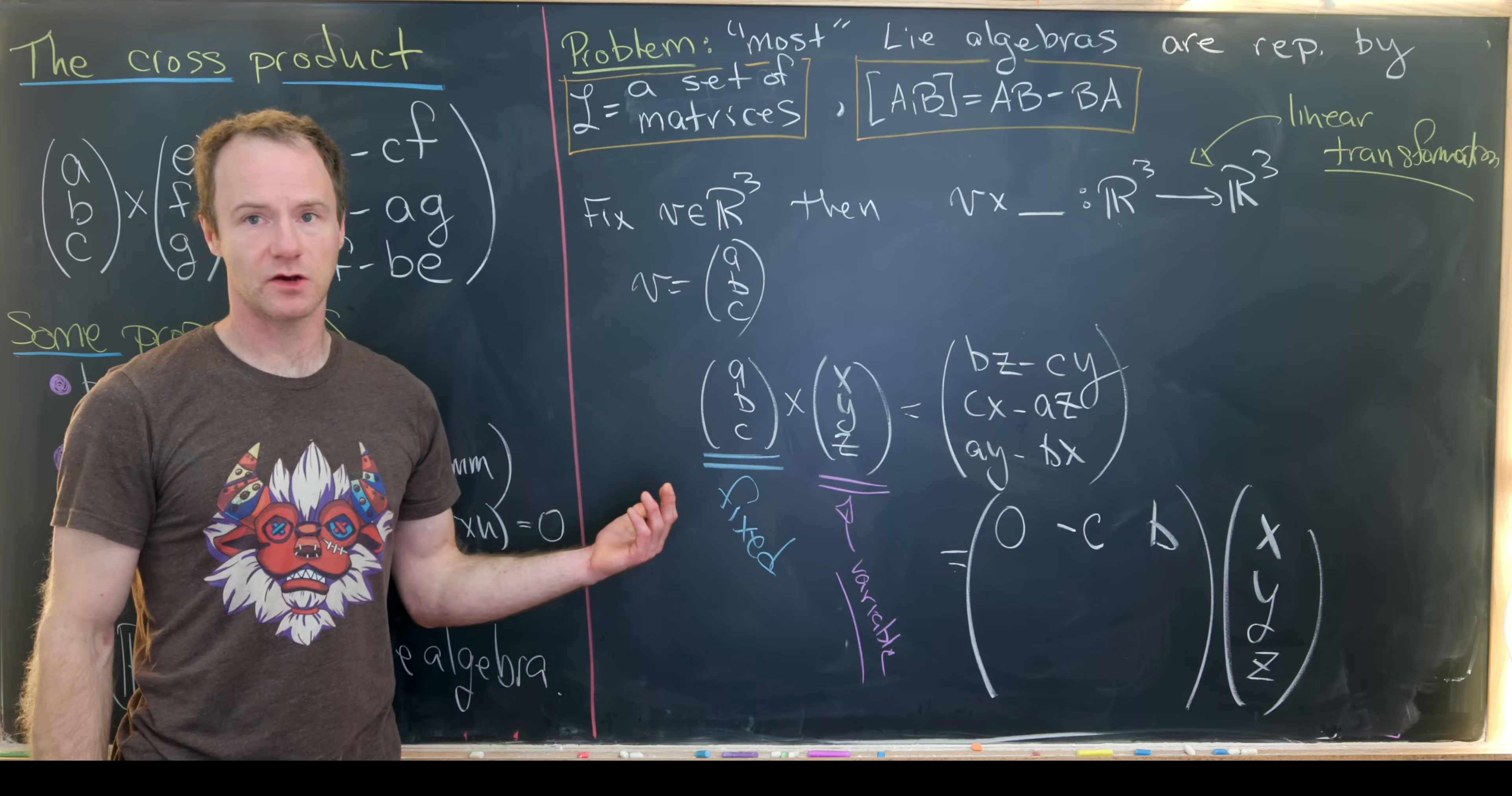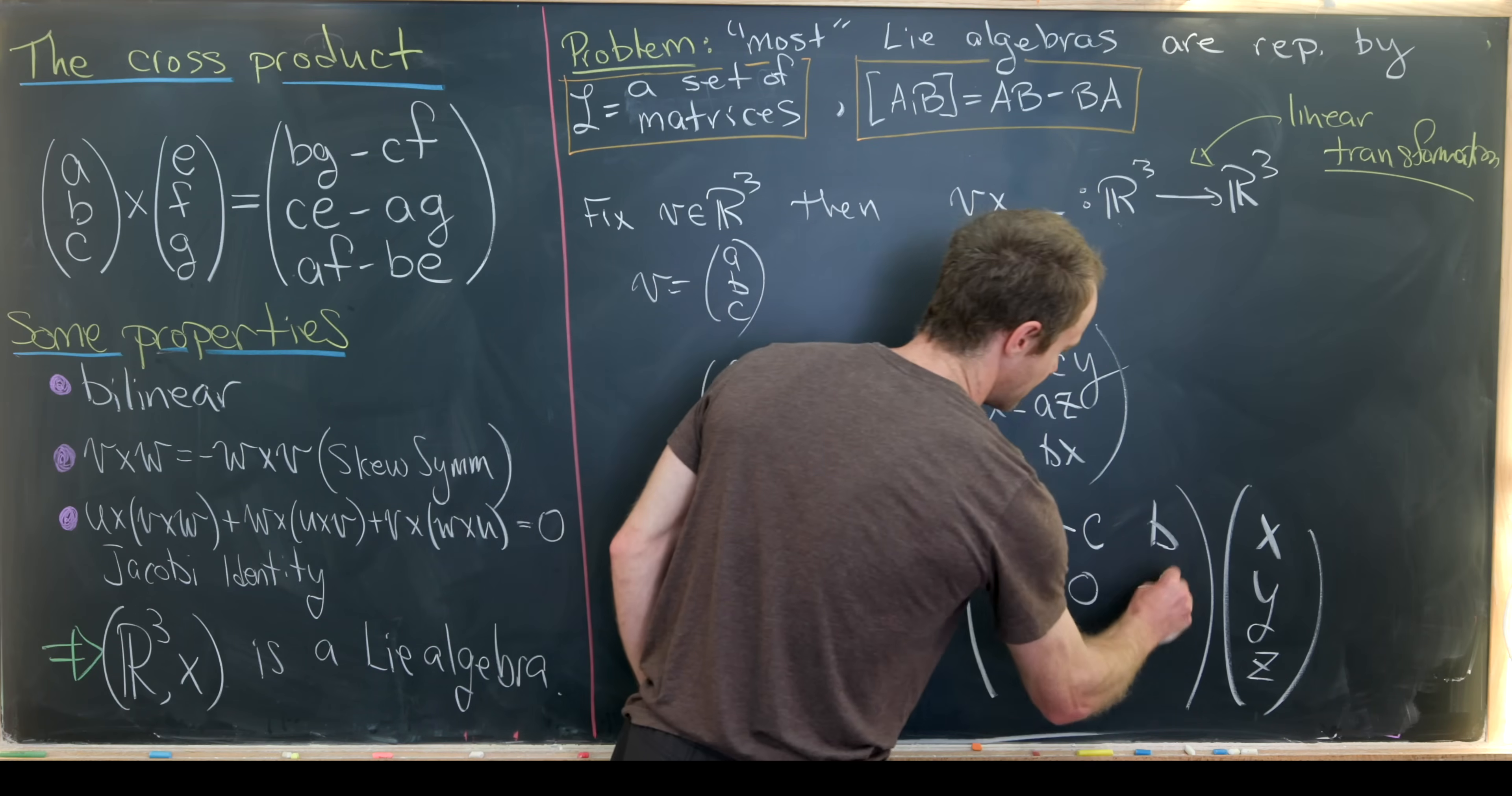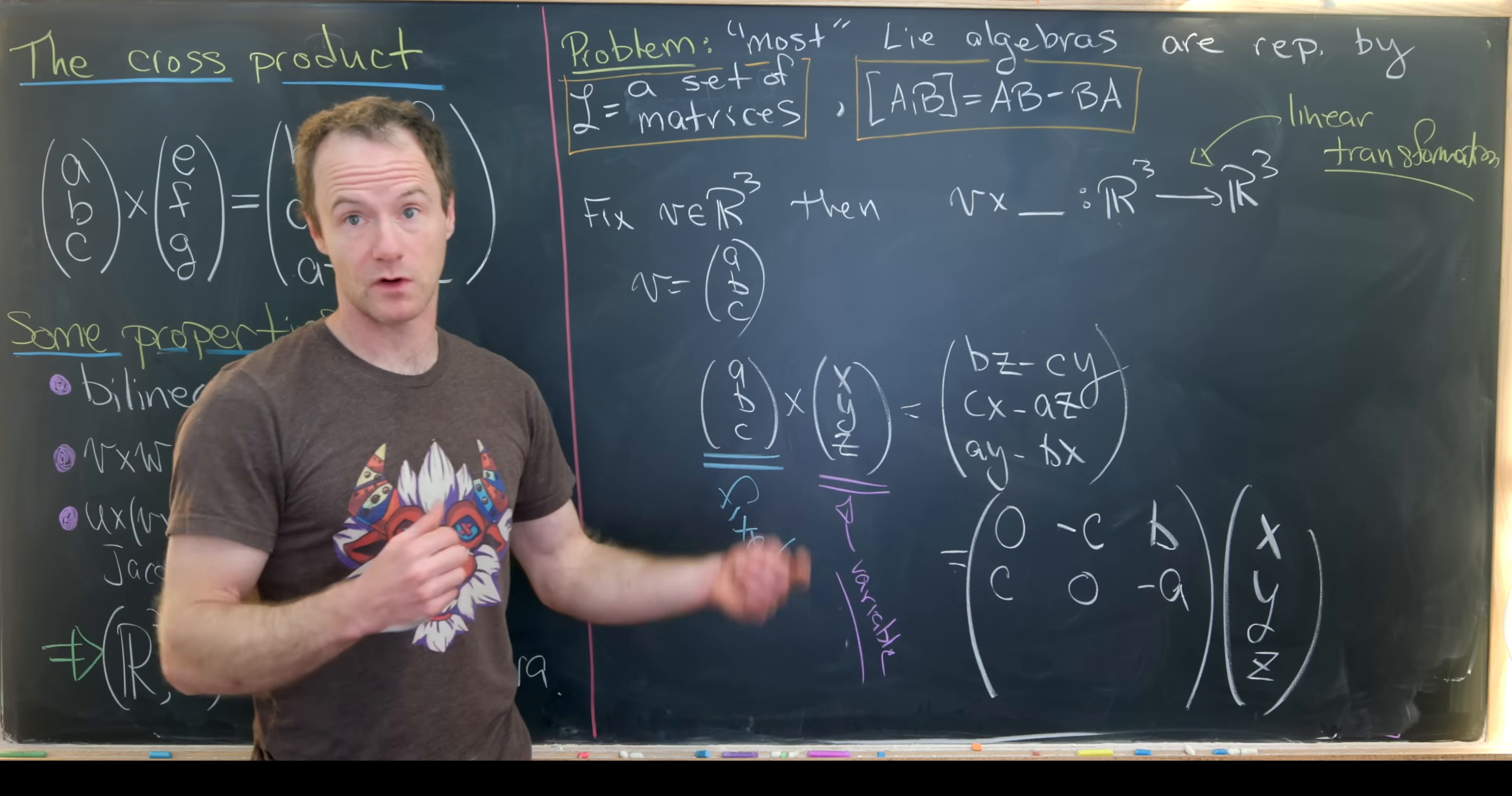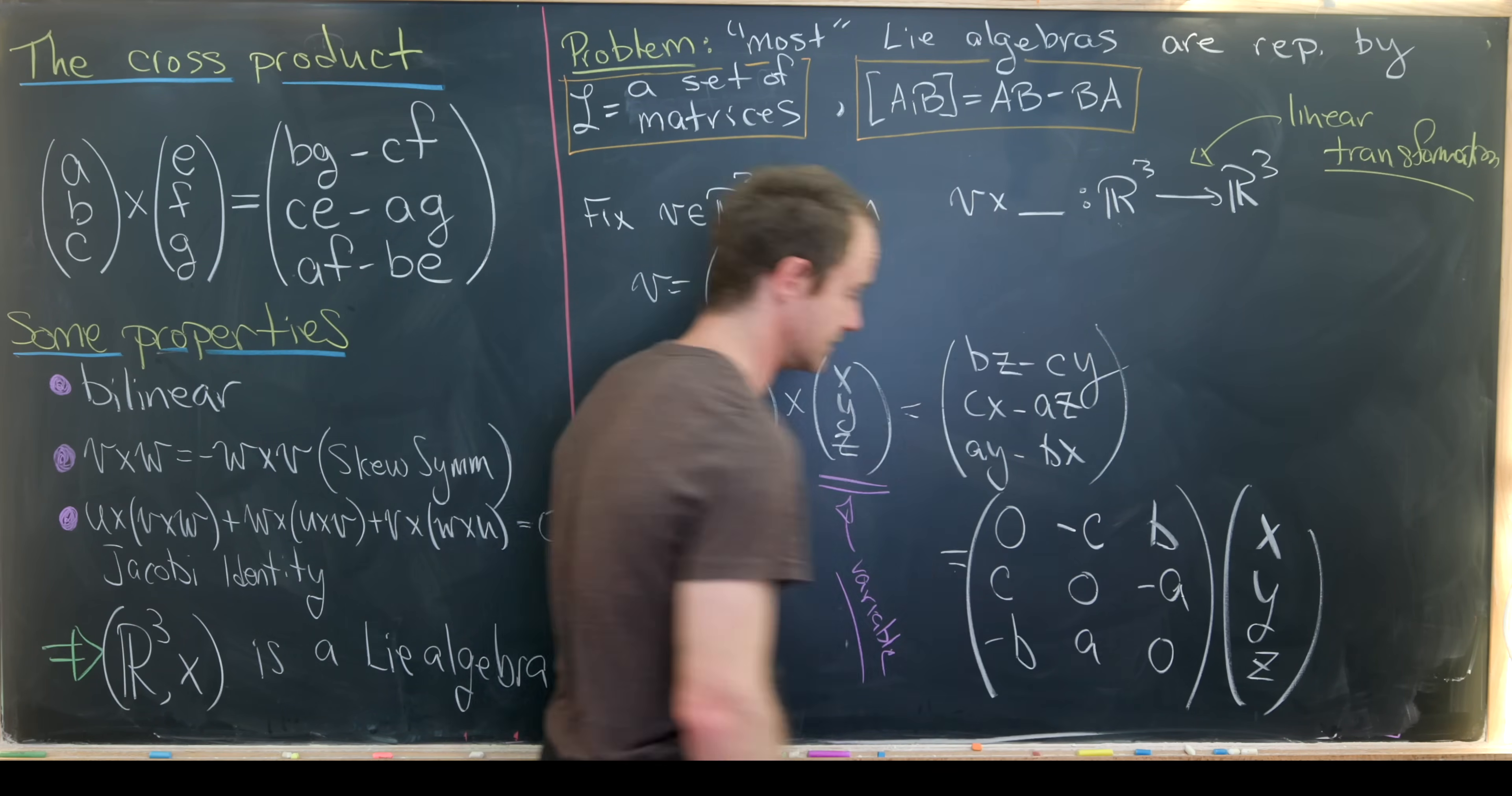Then we can go ahead and go on all the way down for the second row and the second entry, the third row, and this third entry. Let's see what that leaves us with. So that'll leave us with a C here, a zero here, and a minus A here. And then finally here, we'll have negative B, A, zero.